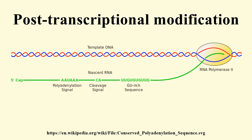Core histone mRNAs have a special stem-loop structure at the 3' end that is recognized by a stem-loop binding protein, and a downstream sequence called the histone downstream element that recruits U7 snRNA. Cleavage and polyadenylation specificity factor 73 cuts mRNA between the stem loop and the histone downstream element. Histone variants such as H2A.Z or H3.3, however, have introns and are processed as normal mRNAs, including splicing and polyadenylation.